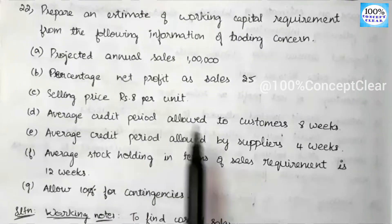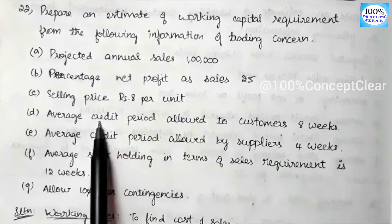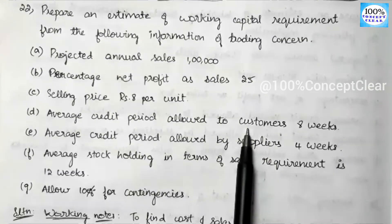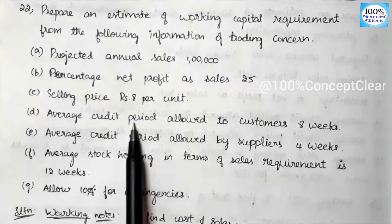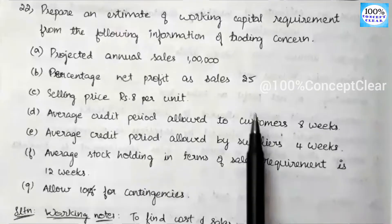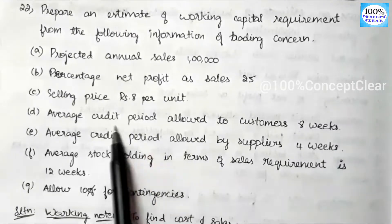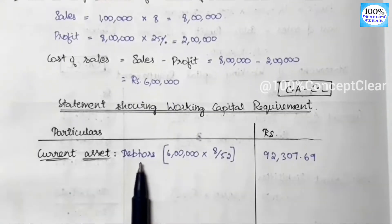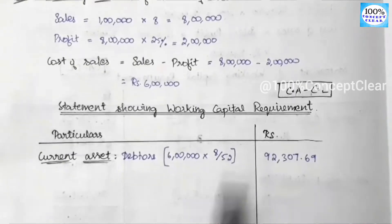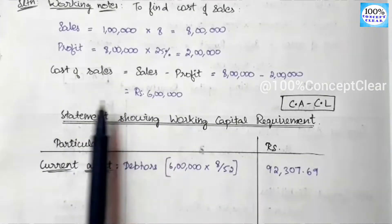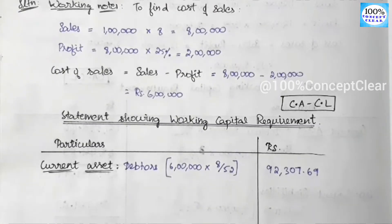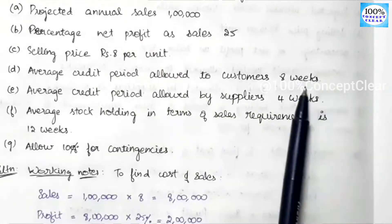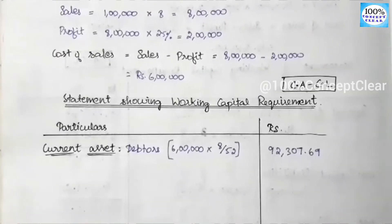Next, we calculate the average credit period allowed to customers, which is 8 weeks. So the debtors amount is calculated as: Cost of Sales × (8 ÷ 52). The cost of sales is ₹6 lakh, so debtors = ₹6 lakh × 8/52. Here we use 52 because there are 52 weeks in a year. This gives us the debtors value as a current asset item.